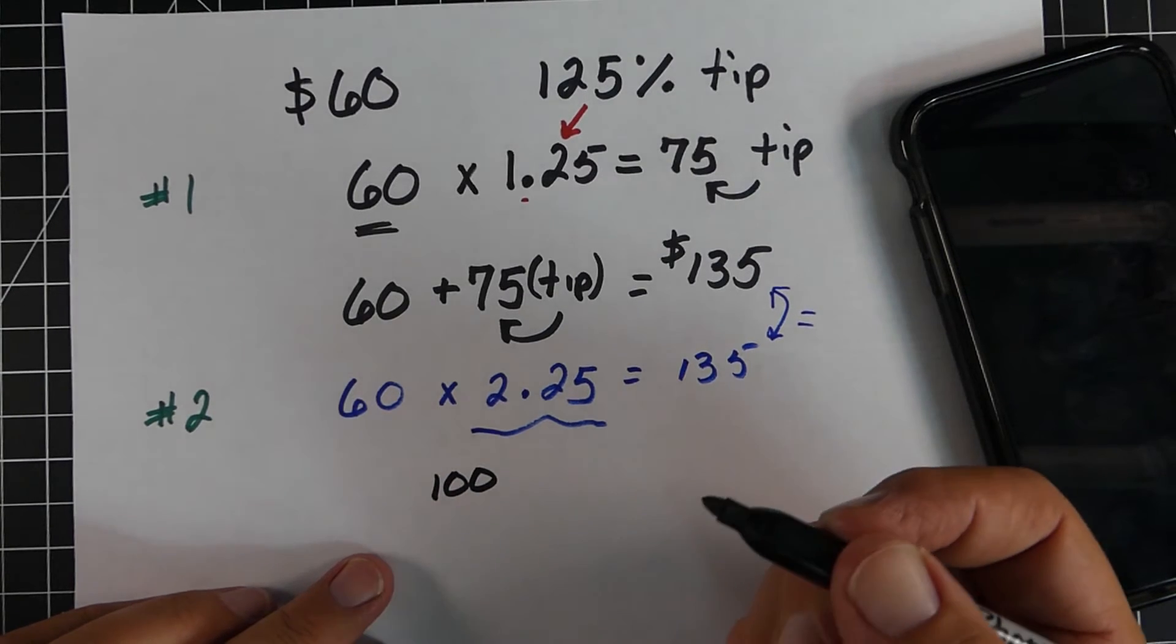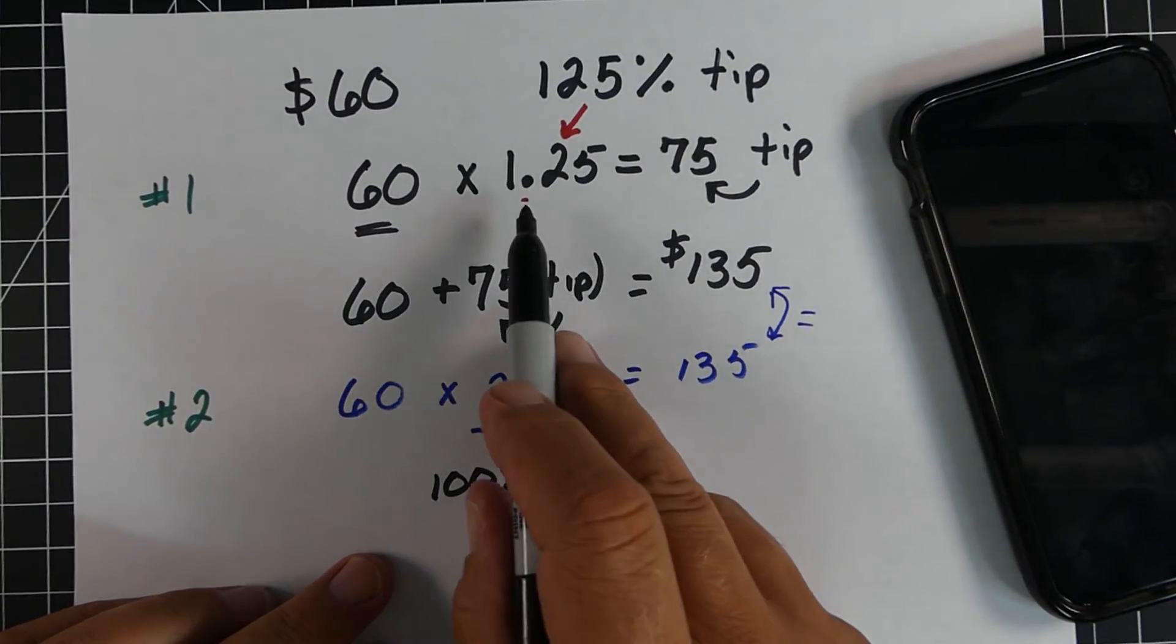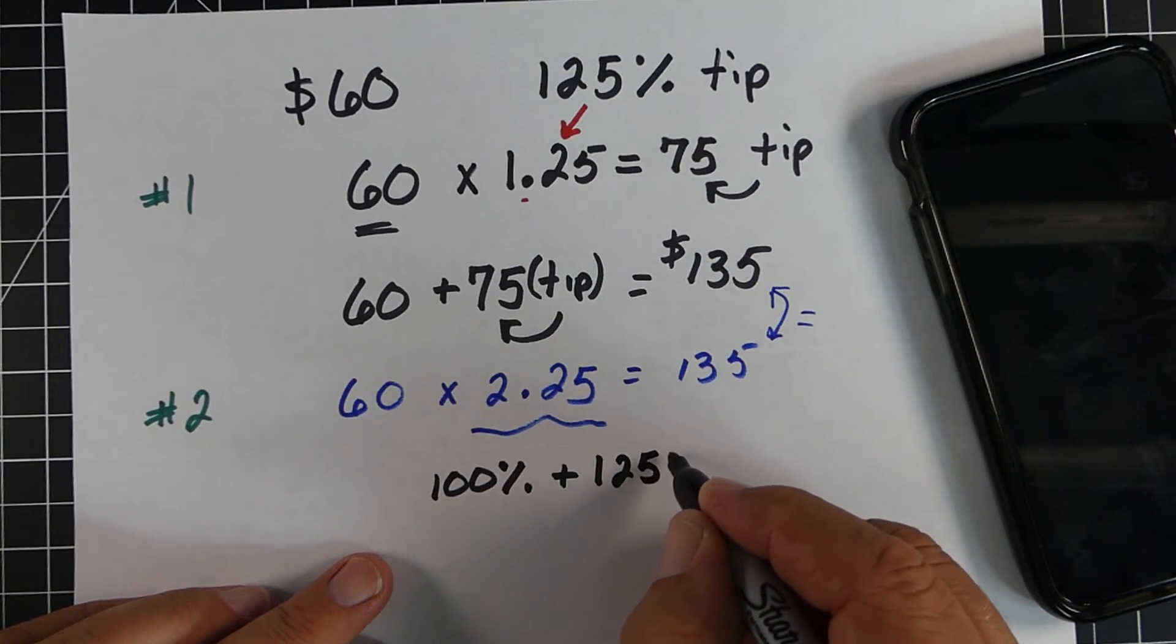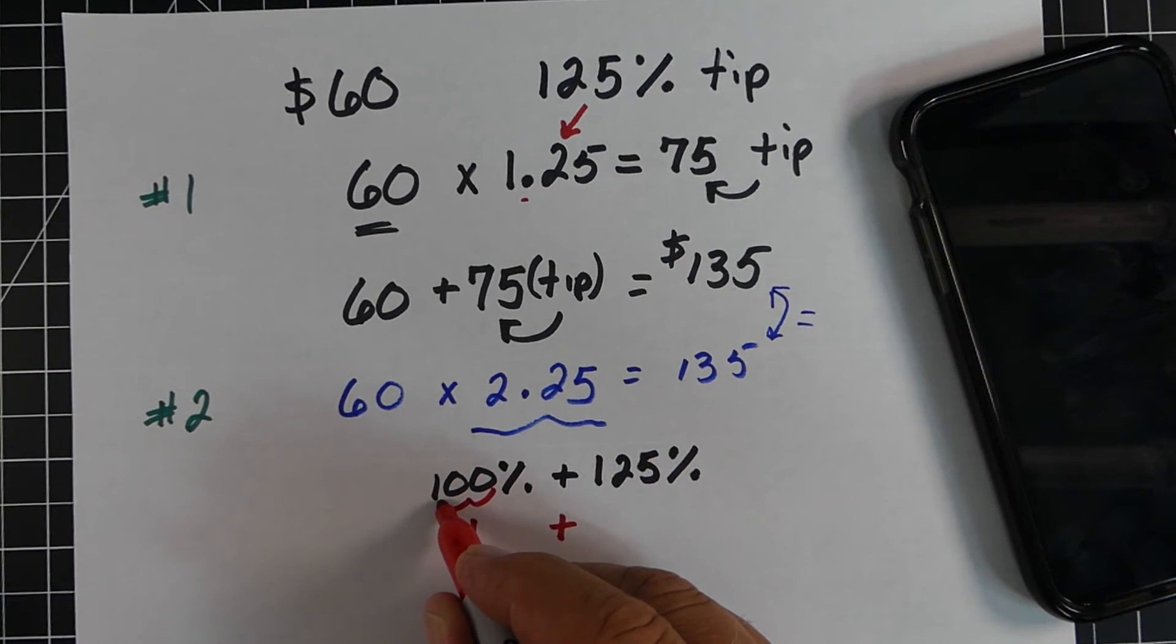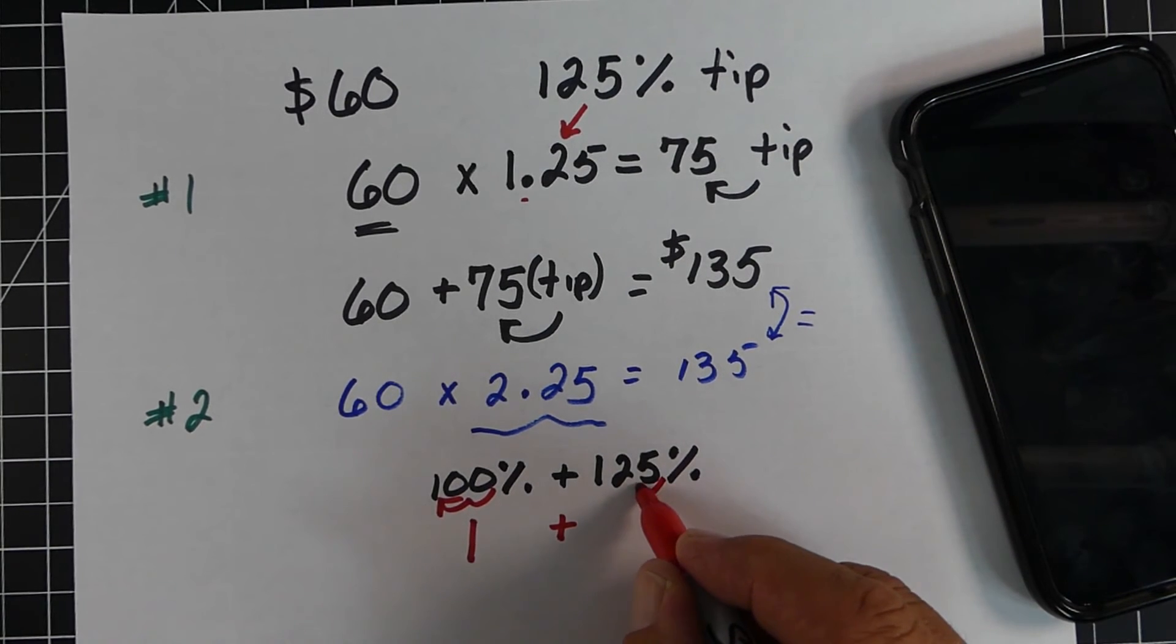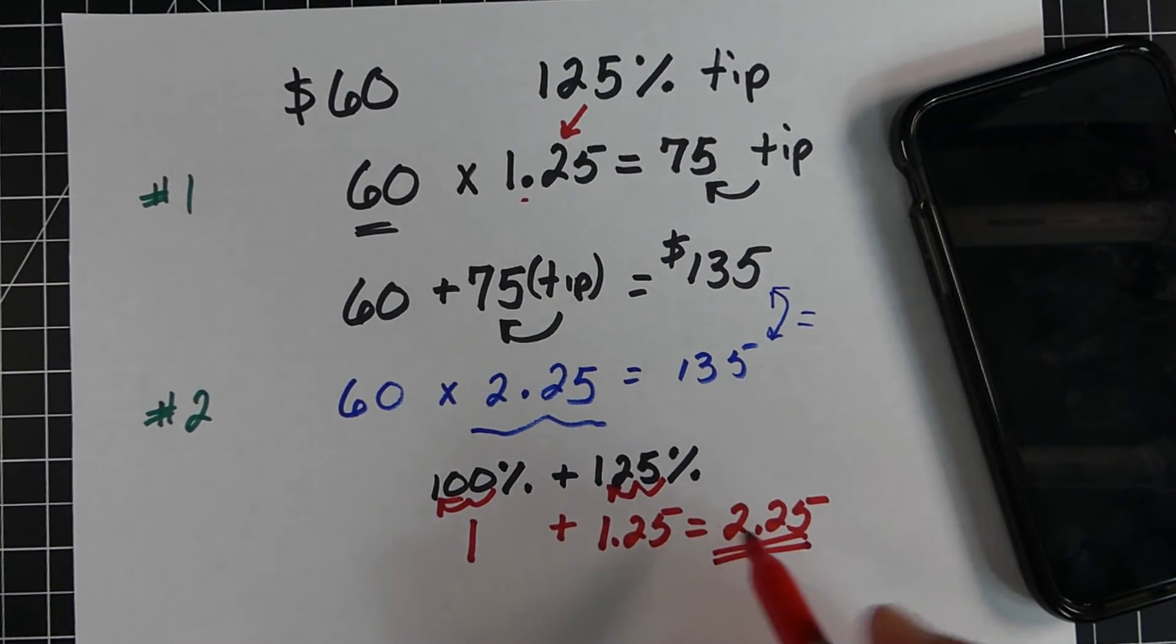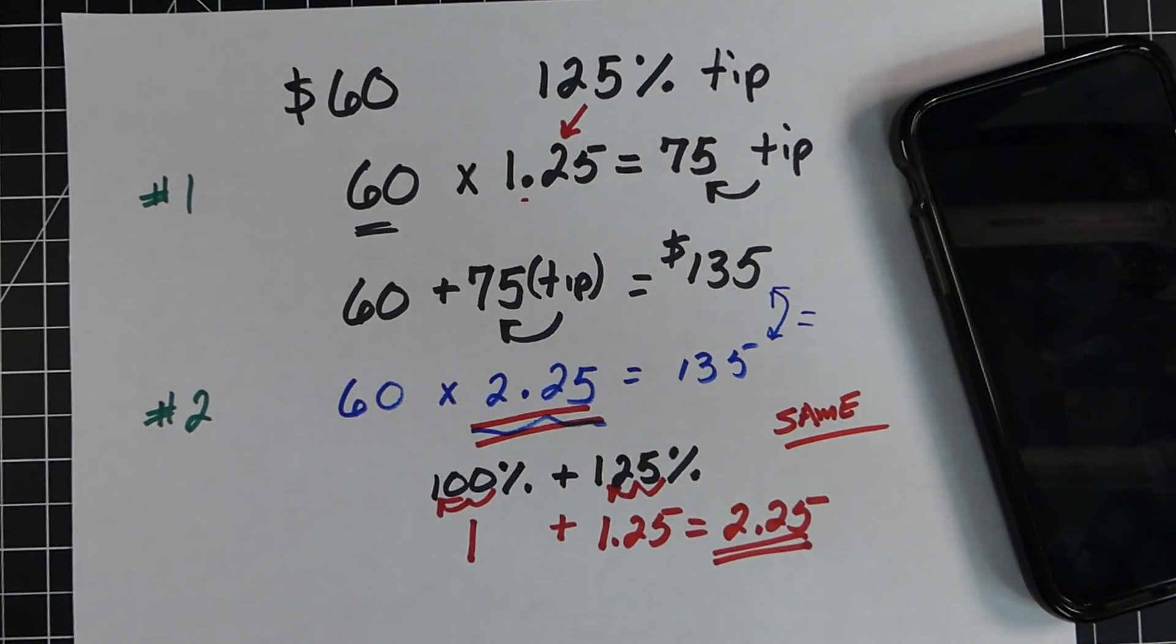Now you might wonder, where are we getting this 2.25 from? Well, the 100% right here represents 100% of the whole amount of the original meal, the $60. We added 120% to it. Now, if we're writing these as, like if we're converting them from percents to decimal, we would divide by 100, so the 100% would be 1, the 125% would be 1.25. So if we put those together, we get 2.25. And that would represent the 100% of the original amount and the 125% of the tip. And so that will give us our total cost. And as you can see here again, it's the same amount.